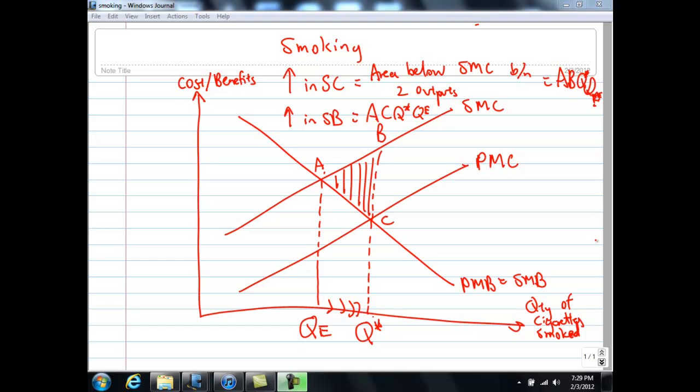A bit of background: the economist that came out with a tax and subsidy policy is known as ACPICU. So sometimes you read tax books, you read about terms like Pigouvian tax, Pigouvian subsidy, which is all what we are saying here.